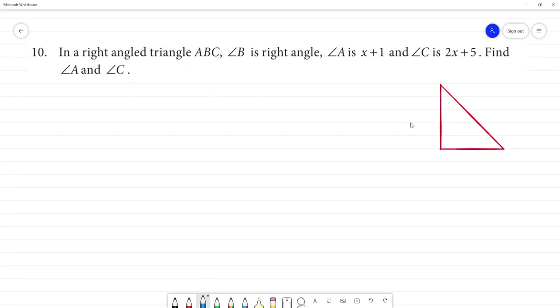In a right angle triangle ABC, this is a right angle triangle. Angle B is right angle. We have to mark this is angle B. This is 90 degree.